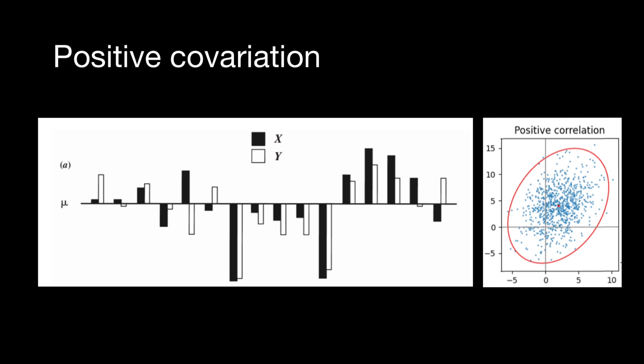But there are also exceptions to the rule. The fifth animal from the left, for example, shows a positive deviation for X and negative deviation for Y. And the animal on the far left shows a very small deviation for X, but a fairly large deviation for Y.